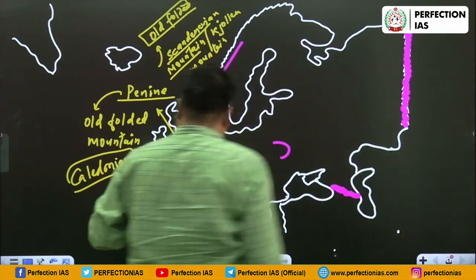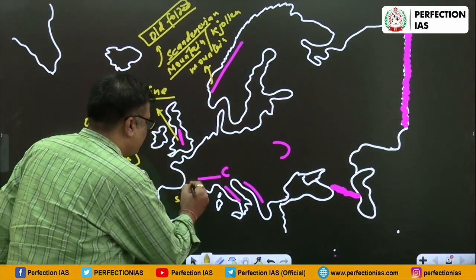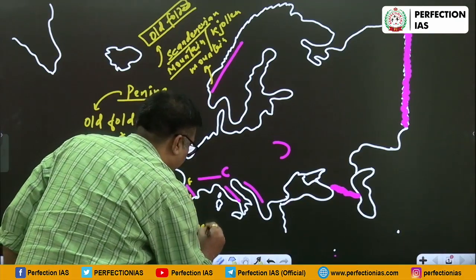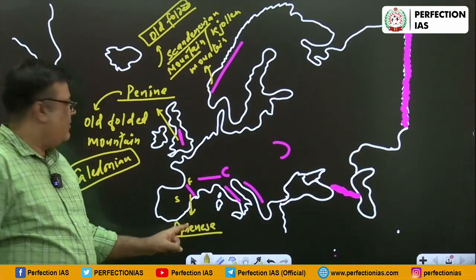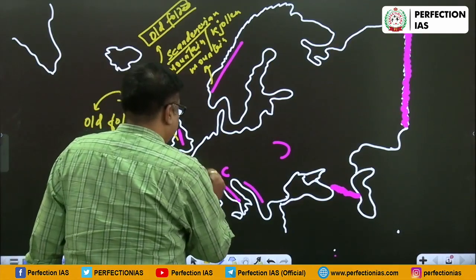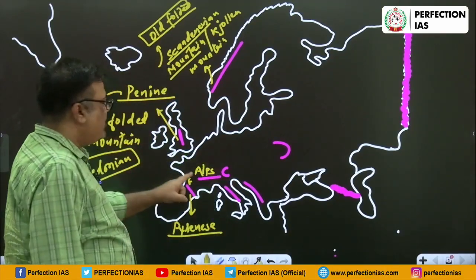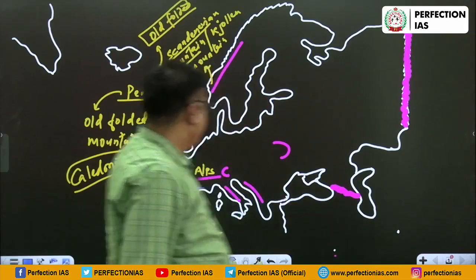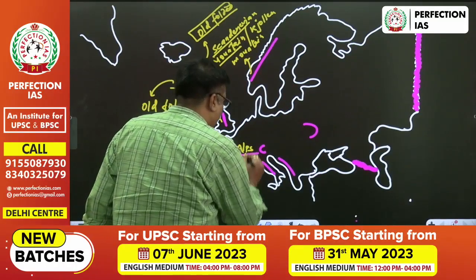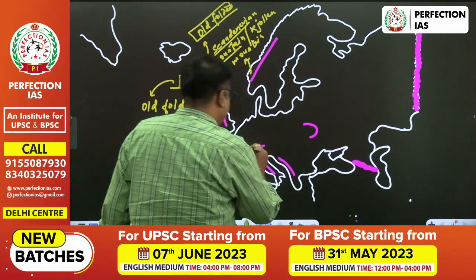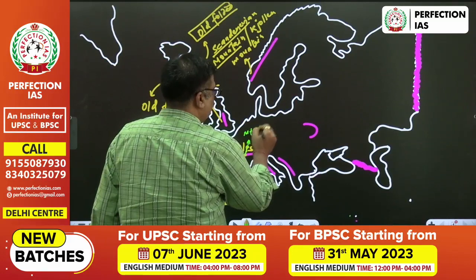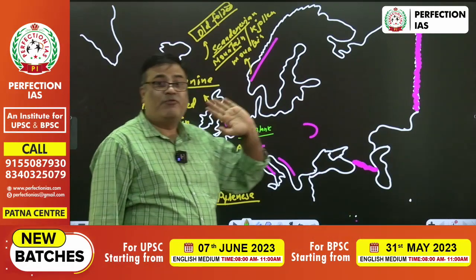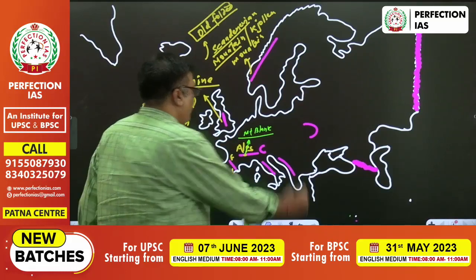Now coming to this part - here is Spain and here is France. The line between the two is called the Pyrenees. Here it is the Alps. Alps - through how many countries of Europe does it pass? Please write in the comment box. Alps has the highest peak, and its name is Mount Blanc. Mount Blanc is not the highest peak of Europe - it is the highest peak of the Alps.